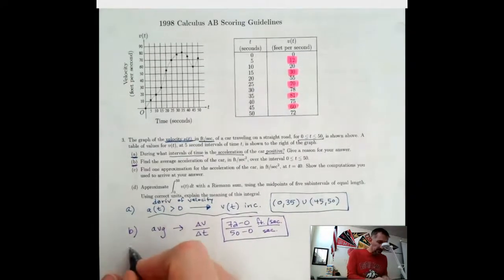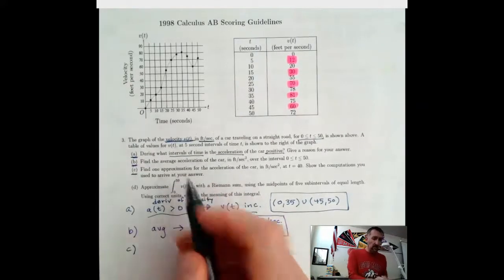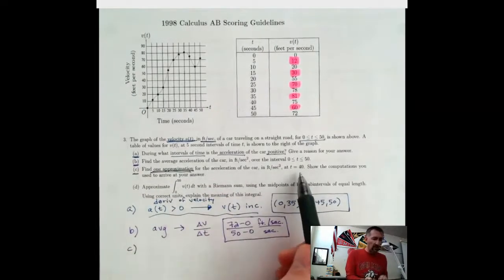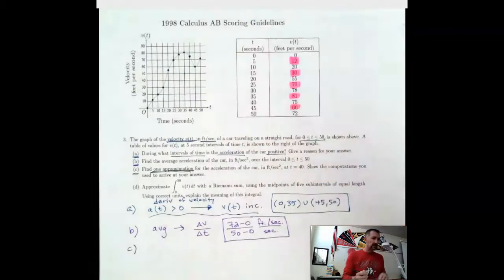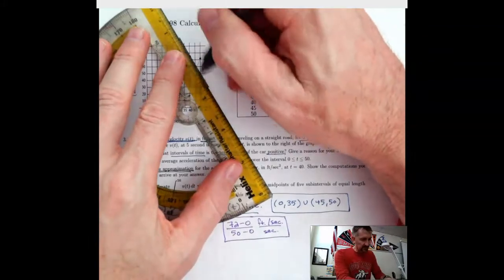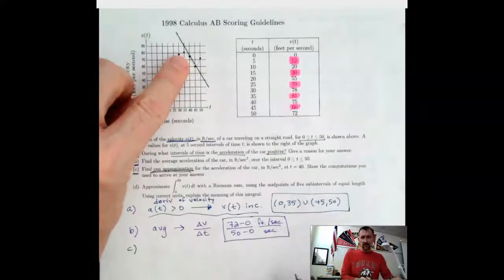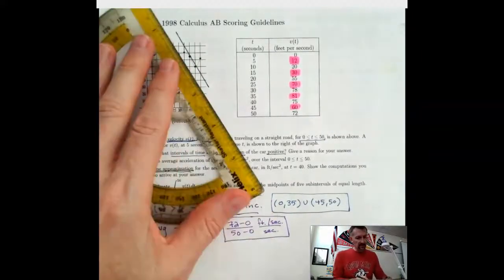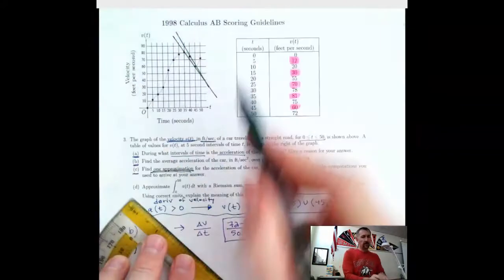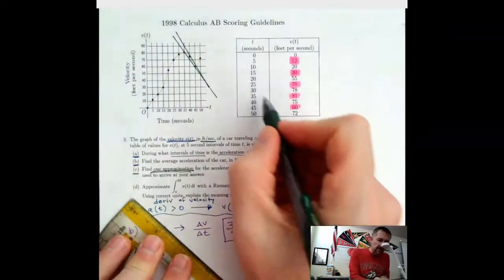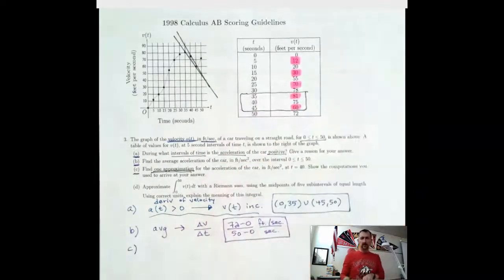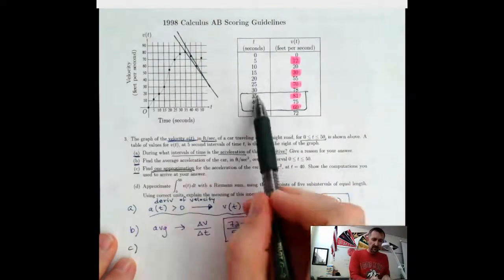So now the next part says find one approximation for the acceleration of the car at 40. So 40 is right here. So an approximation would be the slope, right? The instantaneous is the derivative. So it would be the slope of that line. And so it asks for an approximation. So I'm actually going to use the secant line right here to approximate that. So how am I going to do that? It said 40, so I'm going to go on each side.